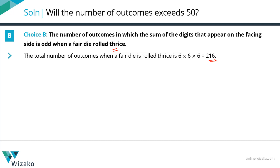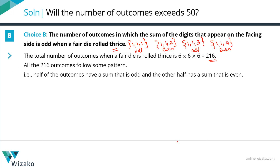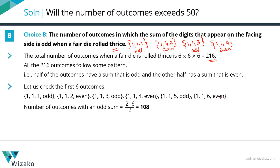Of these 216 outcomes, we need to count those where the sum is odd. Let's list the first few: 1,1,1 → sum 3 (odd); 1,1,2 → sum 4 (even); 1,1,3 → sum 5 (odd); 1,1,4 → sum 6 (even). A clear pattern emerges: half the outcomes have an odd sum and half have an even sum. So 108 outcomes will have an odd sum, which is definitely greater than 50. Choice B is one of our answers.